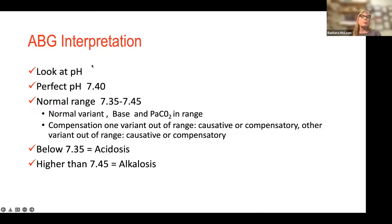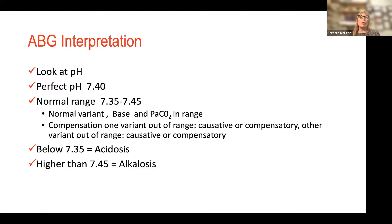In ABG interpretation, look first at the pH. Is the pH perfect? Yes or no. Is it in range? If the pH is in range, this may just be a normal variation — a little extra acid, a little less acid — but it can only be considered normal if both the base and PaCO2 are in range. If one or both are out of range, you either have a primary causative problem or a causative-and-compensatory problem. If the pH is not perfect — say it's down at 7.36 — you either have a problem with compensation or just a normal variation.